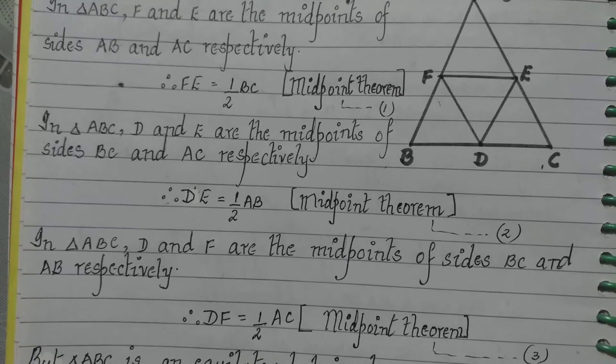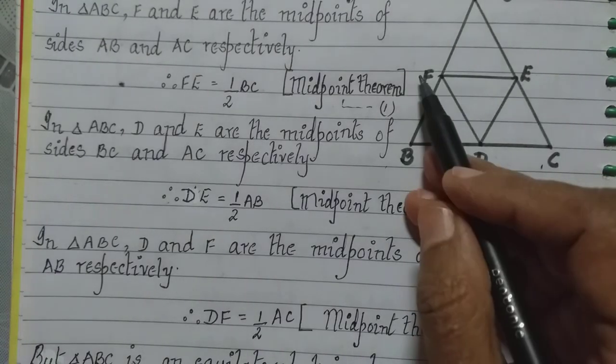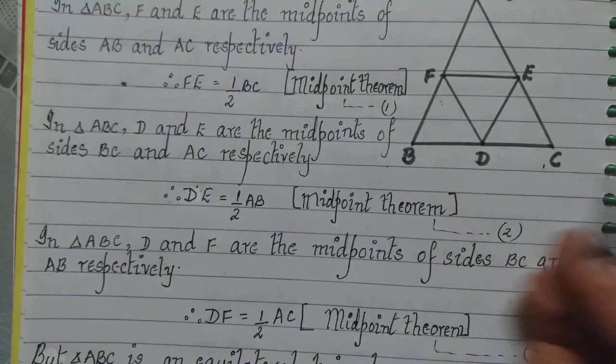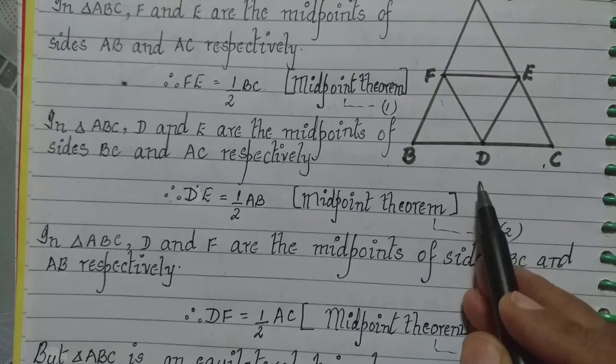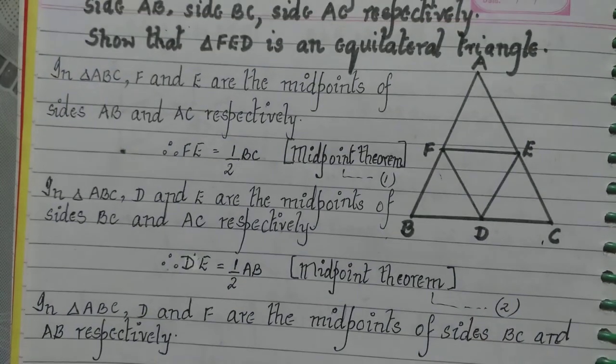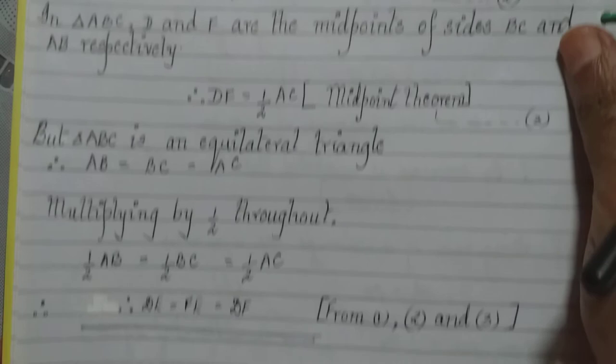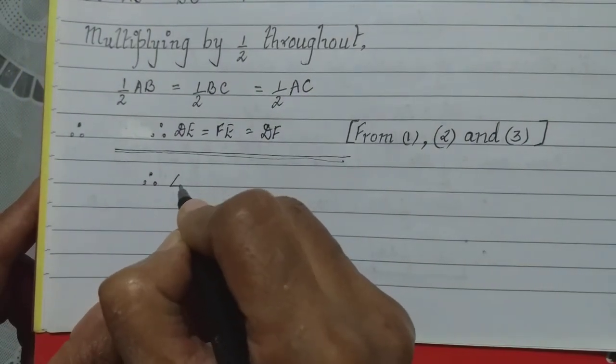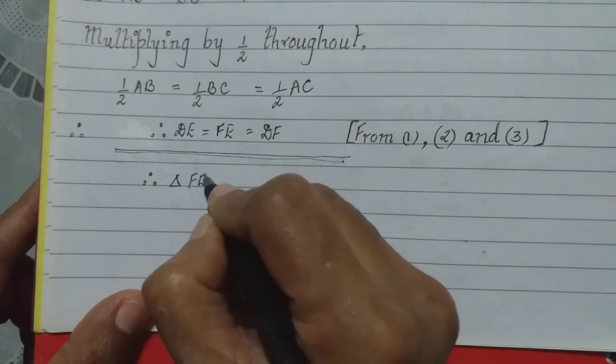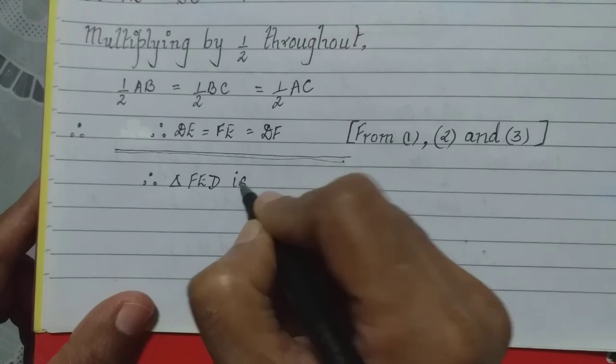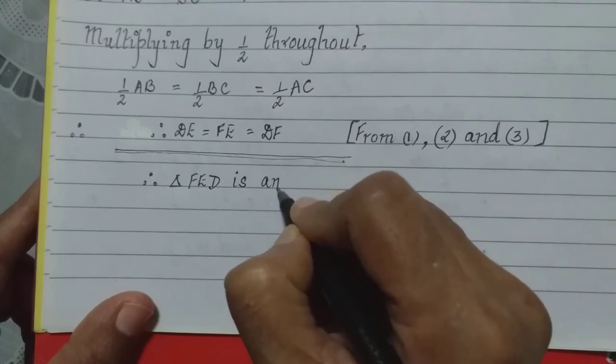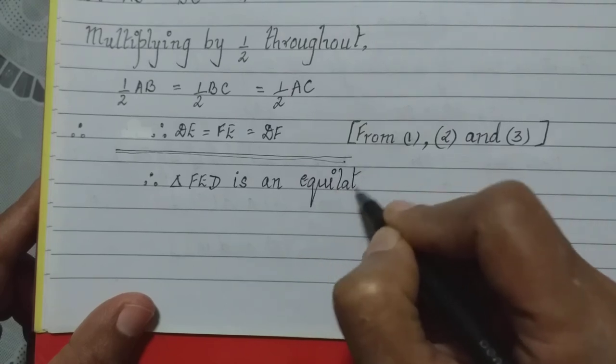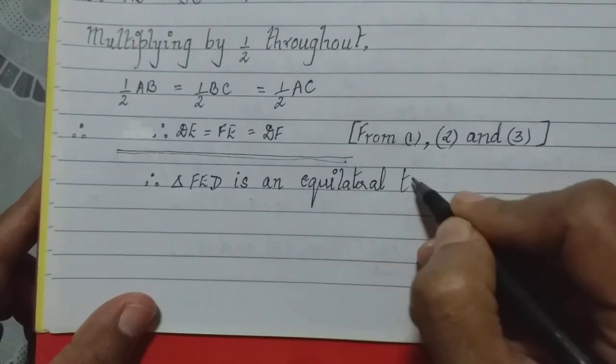So I have got here all the sides. DE, FE and DF are equal to each other. Then what does that mean? If all the three sides are equal to each other, triangle FED is an equilateral triangle. That is what we had to prove. So we will write here below that. Therefore, triangle FED is an equilateral triangle.